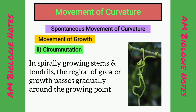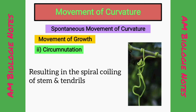Circumnutation: In spirally growing stems and tendrils, the region of greater growth passes gradually around the growing point, resulting in the spiral coiling of stem and tendrils. Such a movement is called circumnutation.